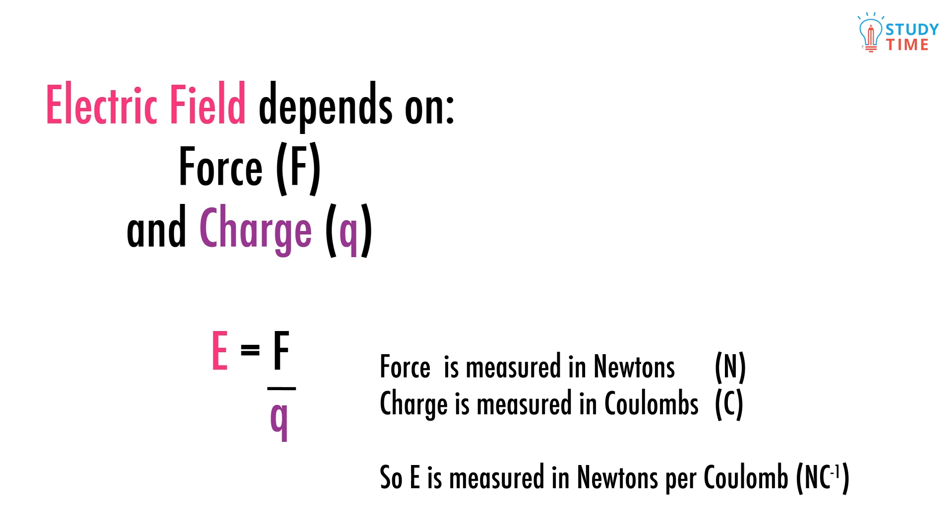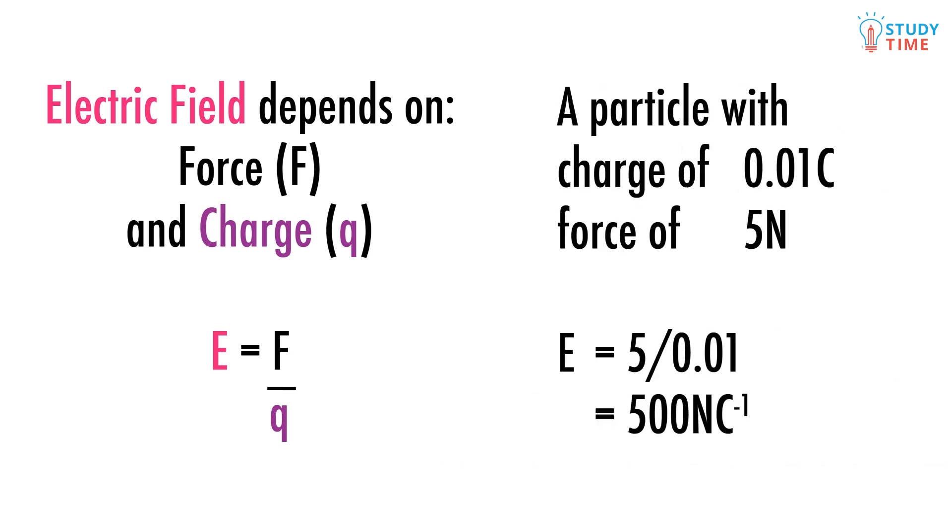So if we know how much charge an object has, and we know how much force is being exerted on that object in its electric field, we can figure out how strong the field is. Let's say a particle has a charge of 0.01 coulombs, and the force on the charge is 5 newtons. We can just stick these numbers into the formula and end up with this. E equals 5 over 0.01, which is 500 newtons per coulomb. Just like that.